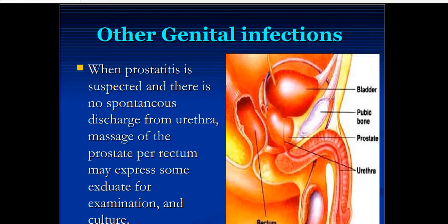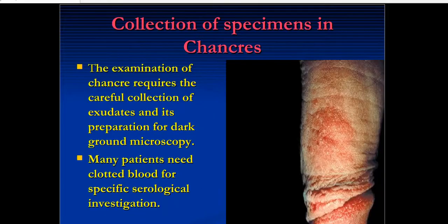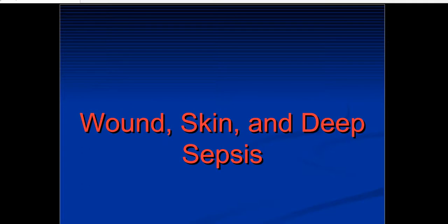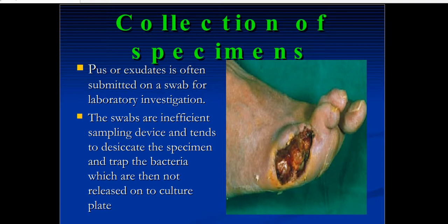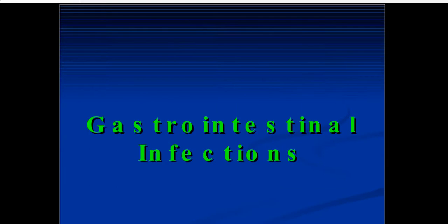For other genital infections, when prostatitis is suspected and there is no spontaneous discharge from the urethra, massage of the prostate per rectum may express some exudate for examination and culture. Examination of chancres requires careful collection of exudate and preparation for dark-ground microscopy. Many patients need clotted blood for specific serological investigation. For specimen collection from wounds, pus or exudate is often submitted on a swab for laboratory investigation. The swabs are then applied to the exudate area, collected, and sent for testing. For gastrointestinal infections, there are also many sample collection procedures.